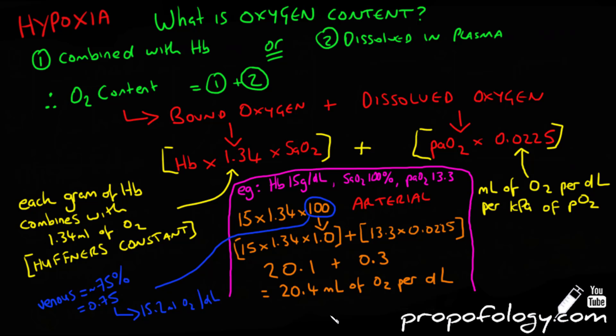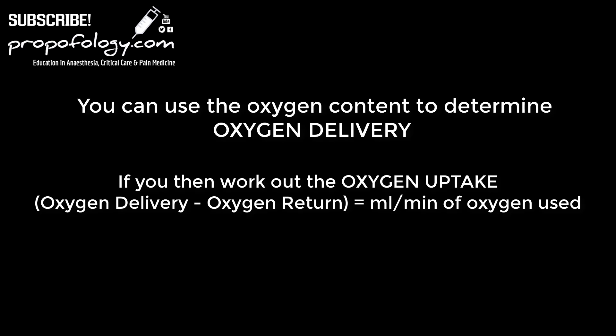If you are to take the oxygen content such as 20.4 of arterial blood and multiply it by the cardiac output that will give you the amount of oxygen delivered.